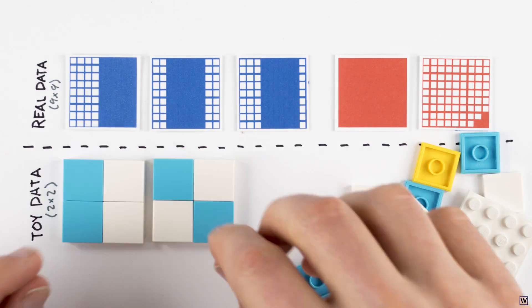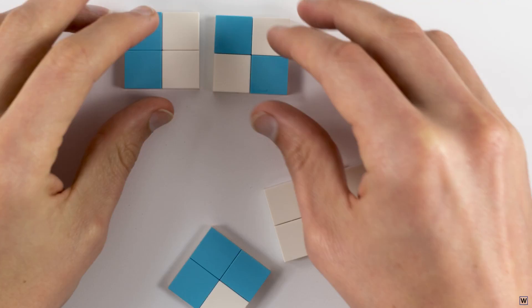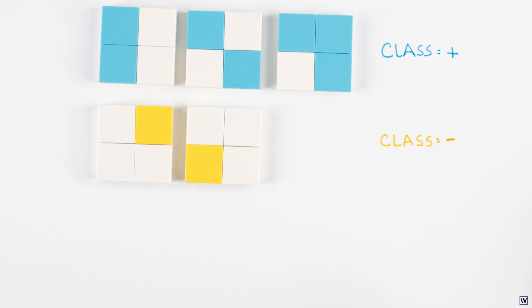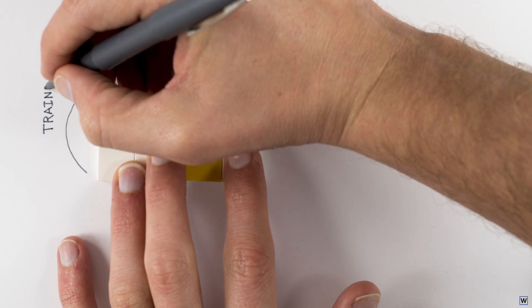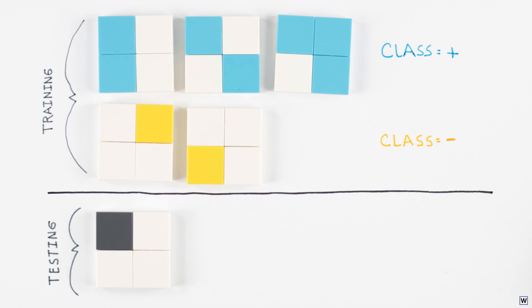This toy data is arbitrary. It doesn't represent fingers or anything, but it's going to help us think about our problem. Let's start with three positive and two negative examples. We'll call these training examples because we're going to use them to learn a rule, and we'll later use this rule to classify examples we haven't seen yet. This is the central architecture of machine learning problems. We have some data, in our case examples of fingers and not fingers, and based on these training examples, we want our algorithm to decide if unlabeled testing examples show fingers or something else.